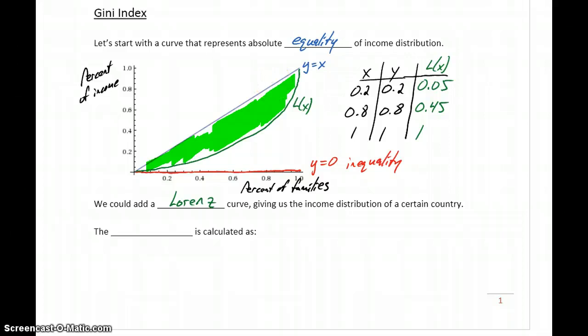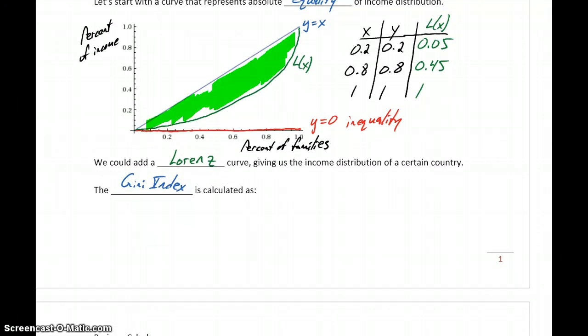So what we're going to be doing is calculating the Gini index, given some Lorenz curve. And the Gini index is going to be calculated as 2 times the integral of 0 to 1 of x, which is that line for perfect equality, minus f(x) dx. And where we have this expression f(x), that's where we would generally plug in our Lorenz curve, L(x). So what we're going to be doing is calculating and then interpreting that resulting number.